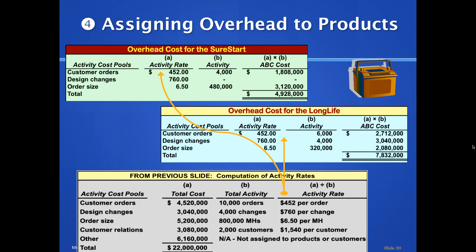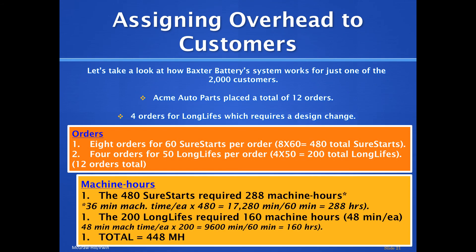Totaling it all together confirms the numbers: the 4.52 million dollars in customer orders times the 10,000 orders ties back to where we determined our activity rates. This true-up confirms we've correctly transferred the activity rates to figure out the different overhead costs for each battery type. Now we'll look at a specific customer example.